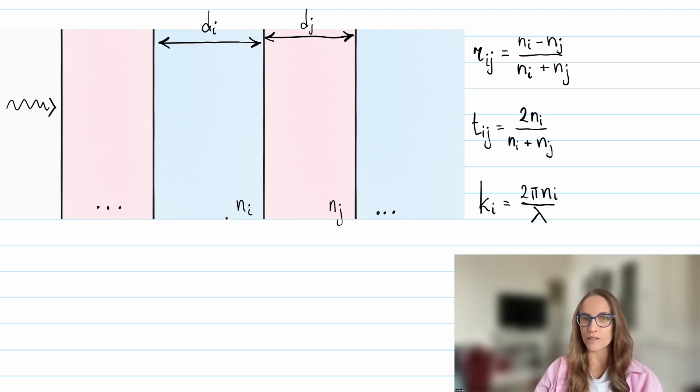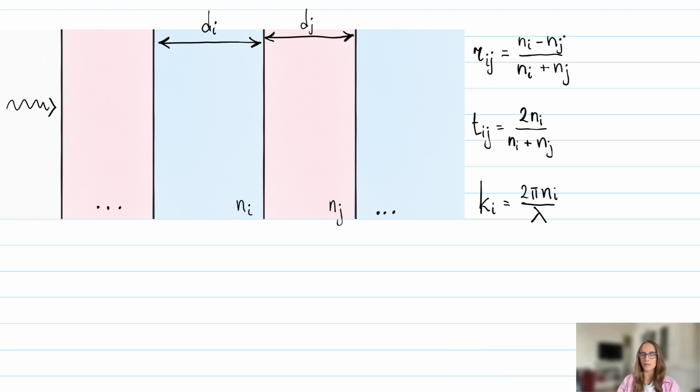You will find the MATLAB code in the description. At the top, you see the Fresnel reflection and transmission coefficients at the interface between layers i and j.